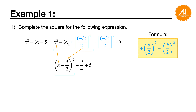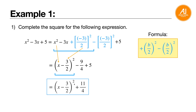So: x squared minus 3x plus that bracket squared gives you this form. Then minus minus 3 over 2 bracket squared plus 5. Minus 3 over 2 bracket squared is 9 over 4. Then plus 5, you just bring down. Combine: minus 9 over 4 plus 5 gives you plus 11 over 4. So the vertex form of x squared minus 3x plus 5 is x minus 3 over 2, bracket squared, plus 11 over 4.